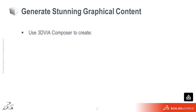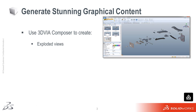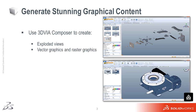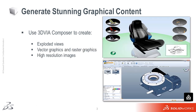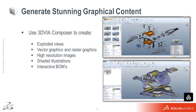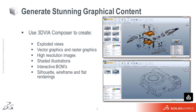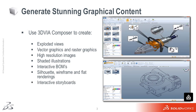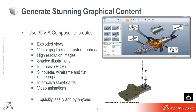3D Via Composer can be used by virtually anyone across an enterprise to produce a comprehensive range of 2D and 3D graphical assets, including exploded views, vector graphics and raster graphics, high resolution images, shaded illustrations, interactive bombs, silhouette, wireframe, and flat renderings, interactive storyboards, and video animations. And 3D Via Composer is not highly technical CAD software.